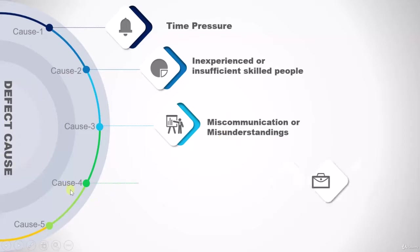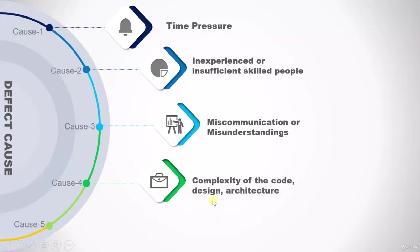The fourth point talks about the complexity of the code, design, and architecture. Even if you are an experienced person on a team, if the code itself is very complex then there is a probability that it may result in a defect.